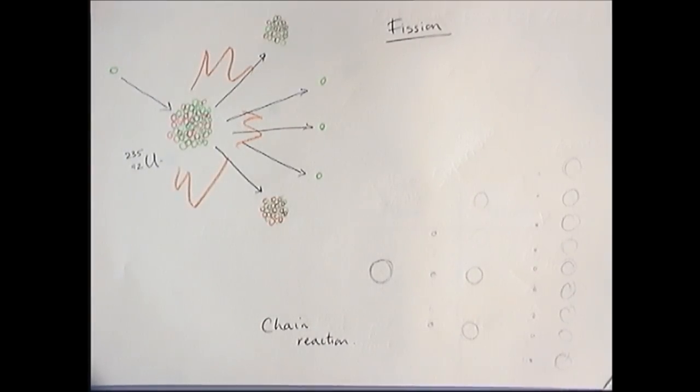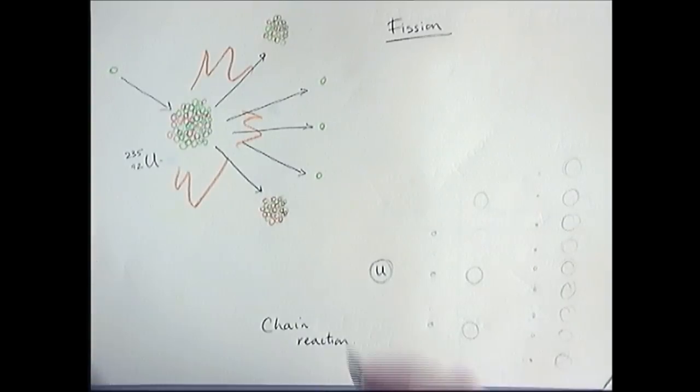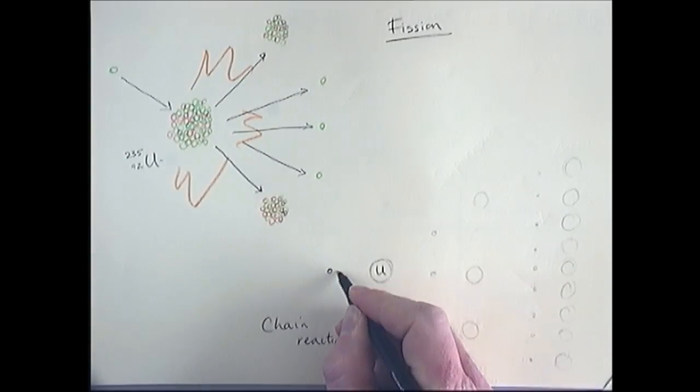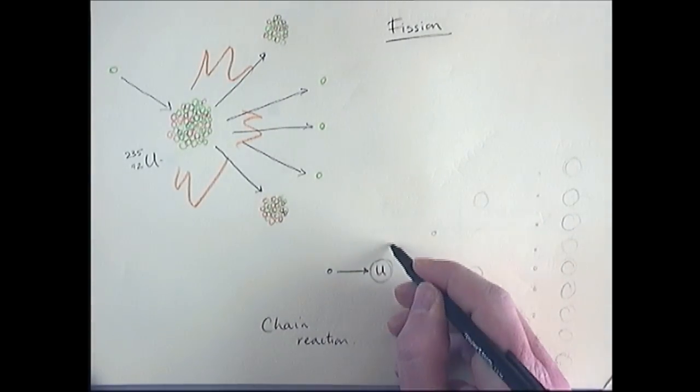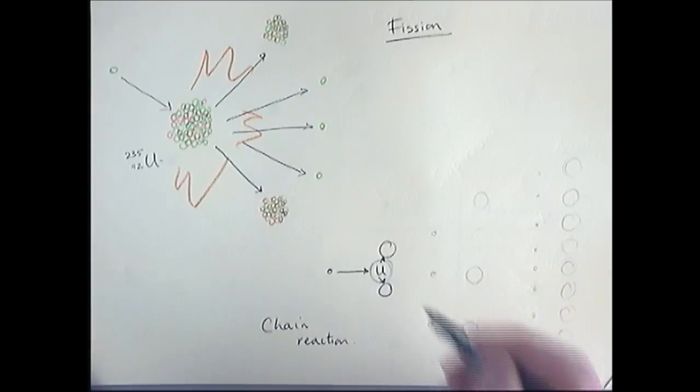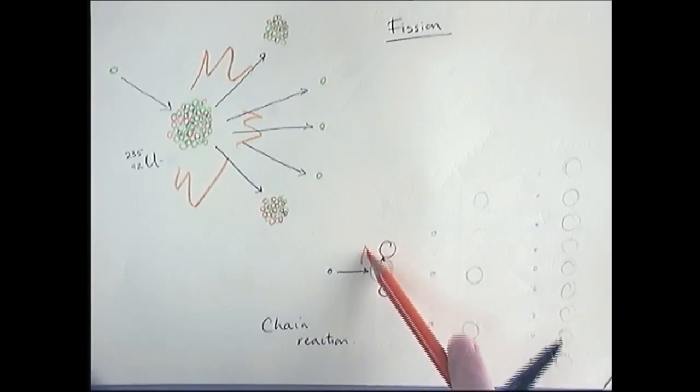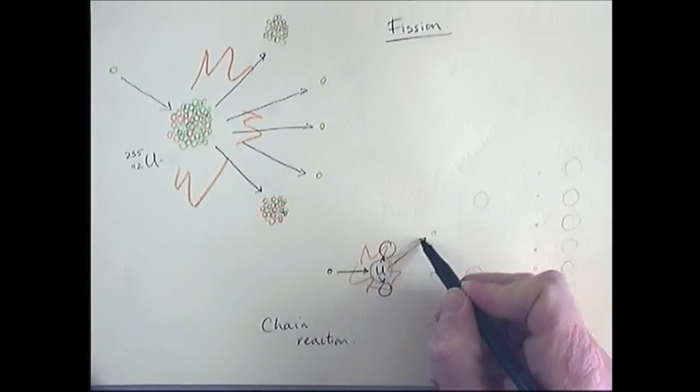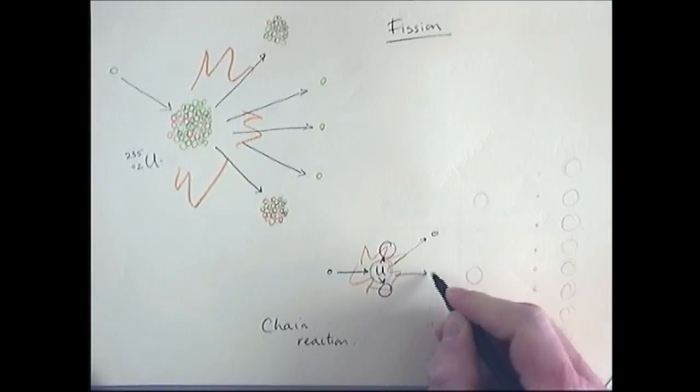You may be asked in an exam to actually understand or complete a diagram like this. So it starts with the uranium, and in comes the neutron. The neutron is absorbed by the uranium. The uranium splits, energy is released, and neutrons are released.